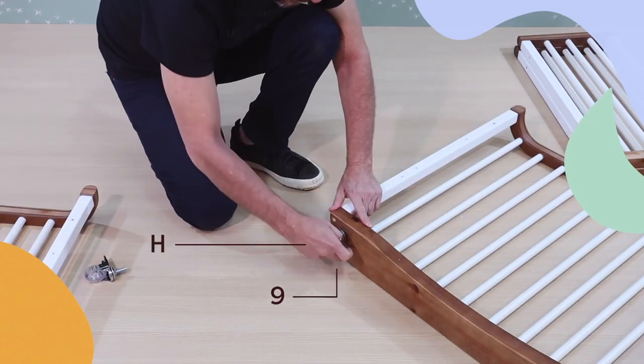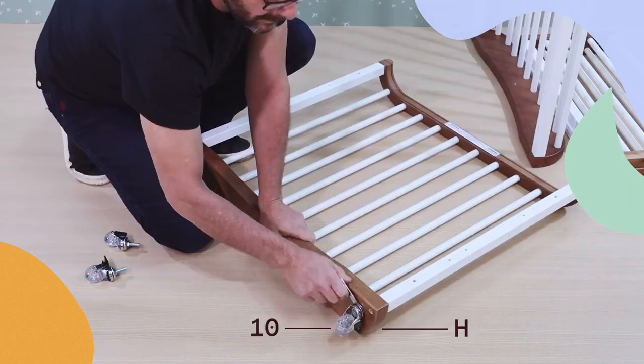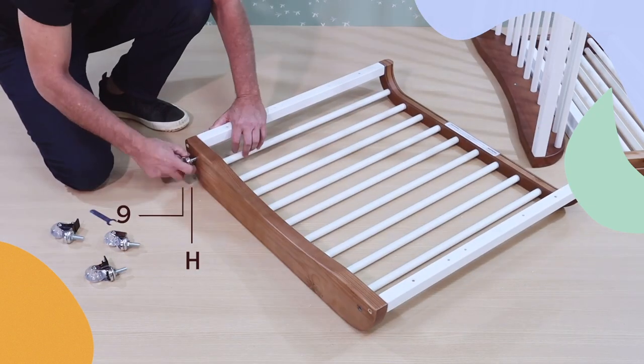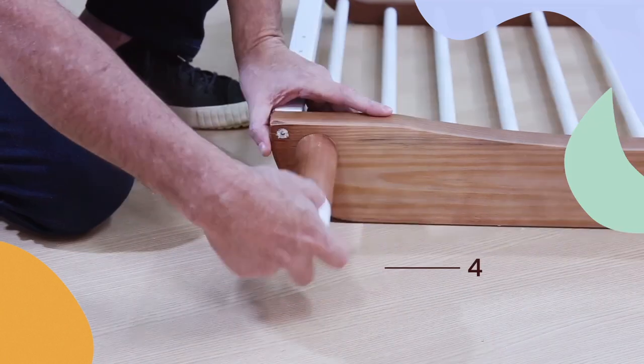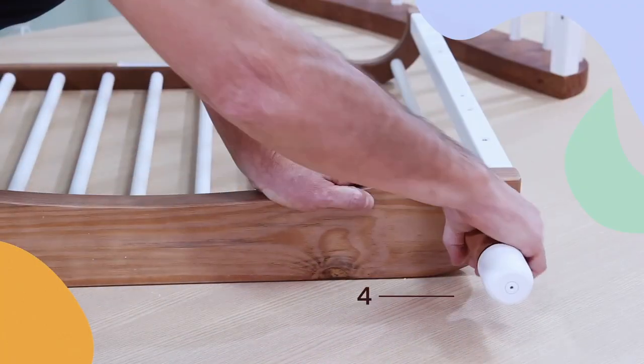Next, unscrew the wheels using your wrench. Now we'll add the legs. Screw each leg, piece 4, into the headboards.